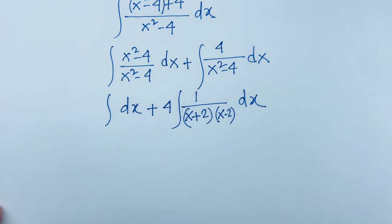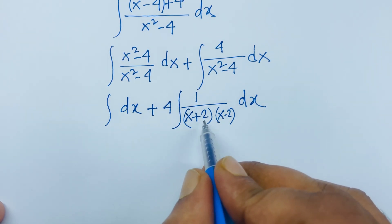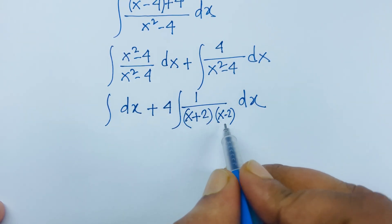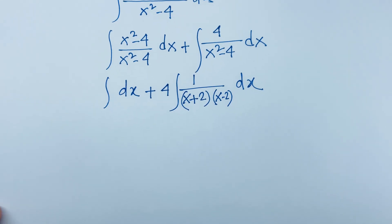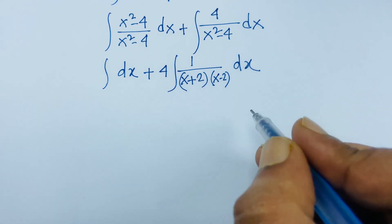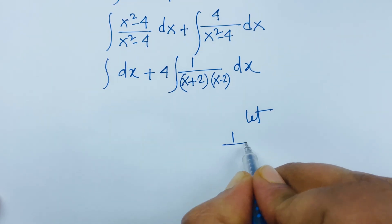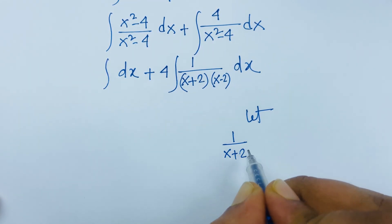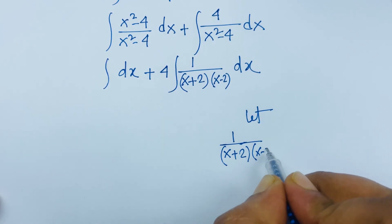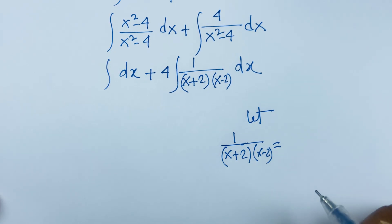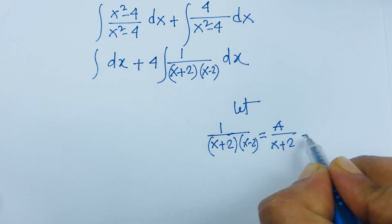So the expression becomes x plus 4 times the integral of 1/[(x+2)(x-2)] dx. To evaluate this, we use partial fractions. We let 1/[(x+2)(x-2)] equal A/(x+2) plus B/(x-2).